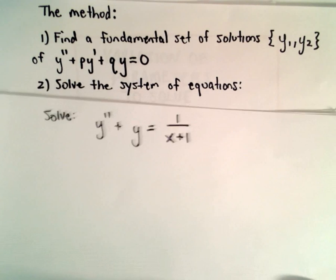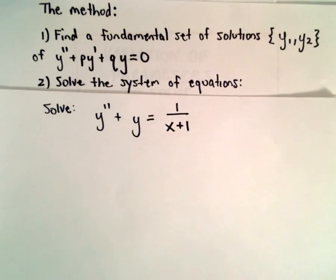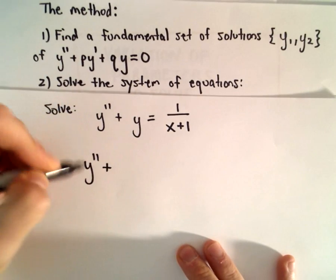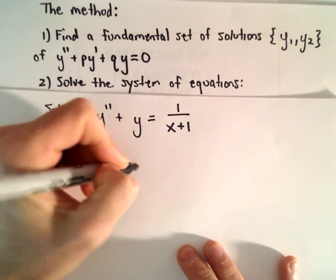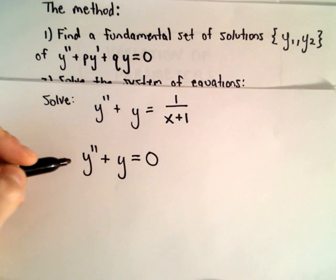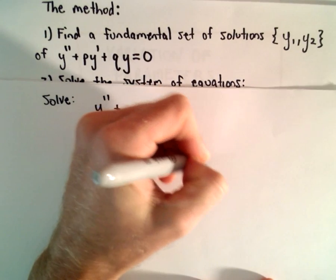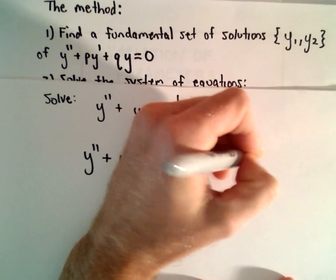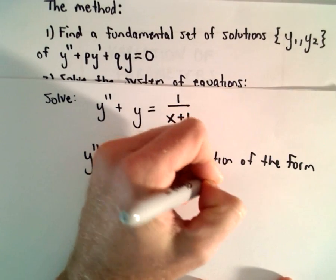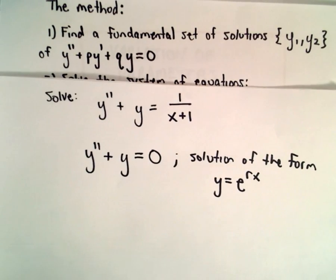In this example, we're not given a fundamental set of solutions right off the bat, so we have to find a fundamental set of solutions to y double prime plus y equals 0. For this type of differential equation, it's known that a solution of the form y equals e to the r times x exists.